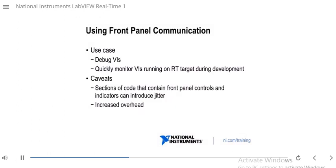The use case for front panel communication is that it's great to debug VIs. You can have your front panel on your host computer, open the block diagram, and use debugging tools such as highlight execution, probes, and breakpoints. All those debugging tools on your host computer will actually affect the code running on your RT target. With front panel communication, you can also easily update controls and look at indicator values on your host computer while the RT VI is running on your RT target.